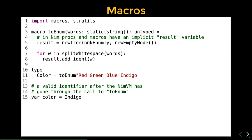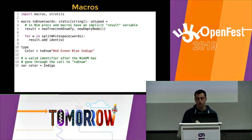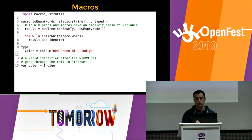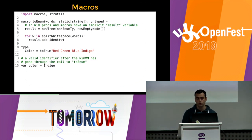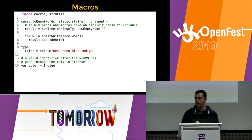The next thing is macros. Here we have a to-enum macro that receives a string. In the type section, we define an enumeration called color by calling to-enum and passing a string with enum values. At compile time, it takes that string, splits it by whitespace, iterates over the words, generates new identifiers, and adds them to the AST node of type enumeration. After the type section, those identifiers can be used as if written by hand — they are now valid code.